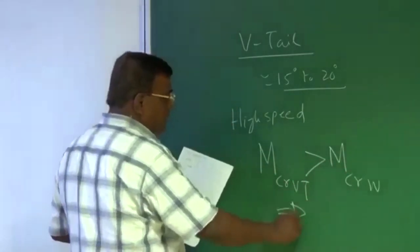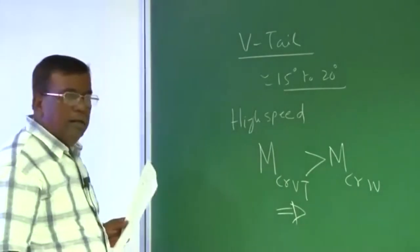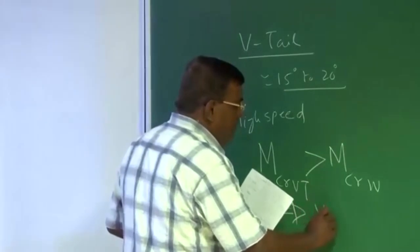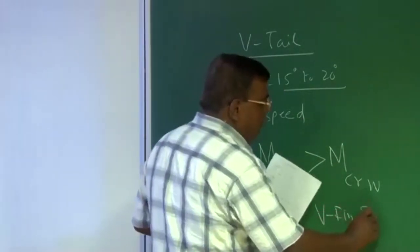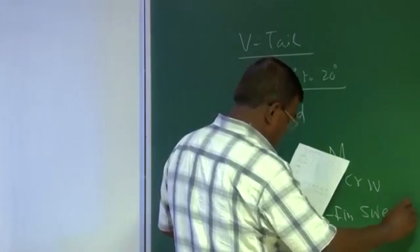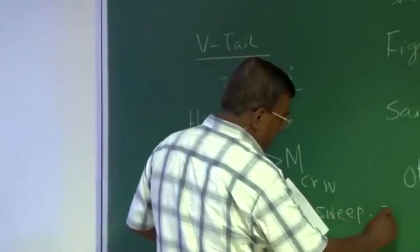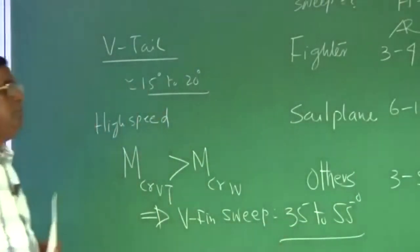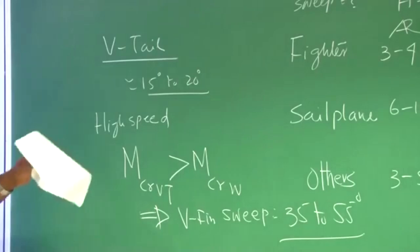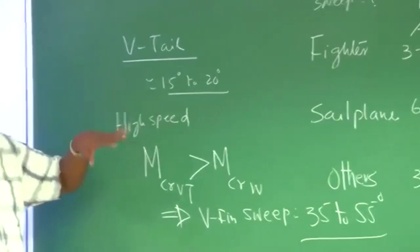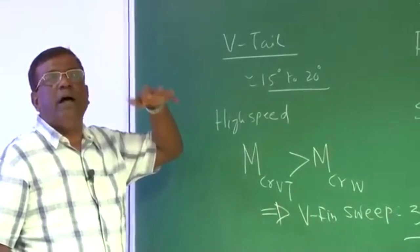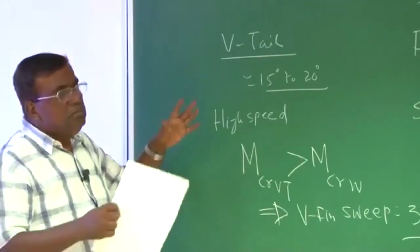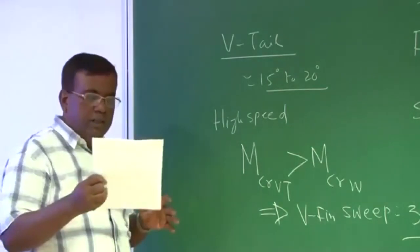That demand has resulted in vertical fin sweep on the order of around 35 to 55 degrees in general. So when you see a configuration, these are the guidelines. Ask yourself: am I designing a low-speed or high-speed aircraft, and what sort of stall characteristics does the wing have? Then you can pick those numbers and draw the initial sketch.